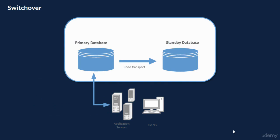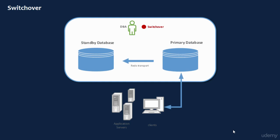This is a simple diagram which explains the switchover operation. Here we have application servers or clients connected to the primary database, and the primary database is in sync with the standby database. The DBA decides to perform some changes on the primary database, so he performs a switchover. This results in the standby database becoming the primary database, the primary becoming standby, and clients connecting to the new primary. The redo transport services direction is reversed — from the new primary database to the new standby database.